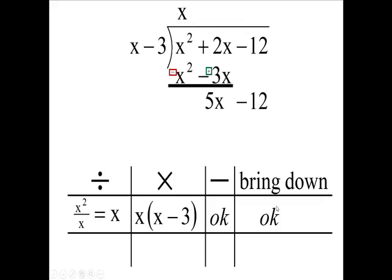Now we've done our four steps, so we have to start over again. We're going to divide again, taking 5x and dividing it by x. That's going to go 5 times, so that's my next part of my answer.